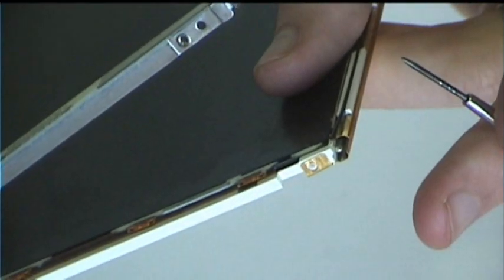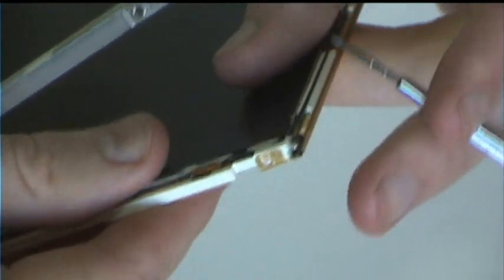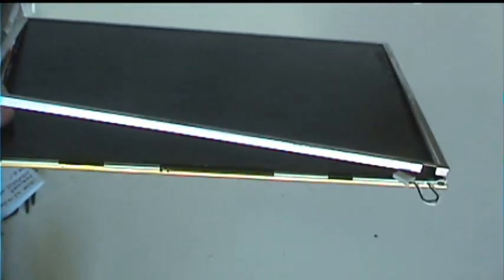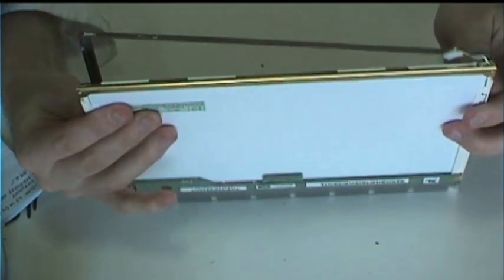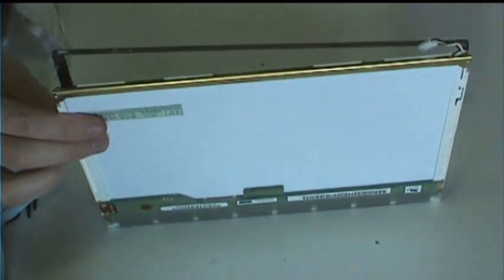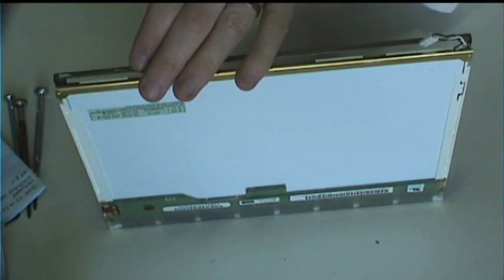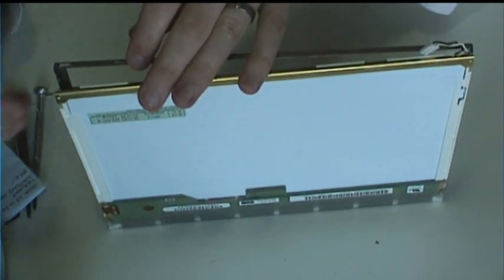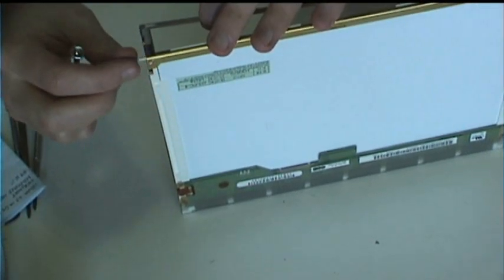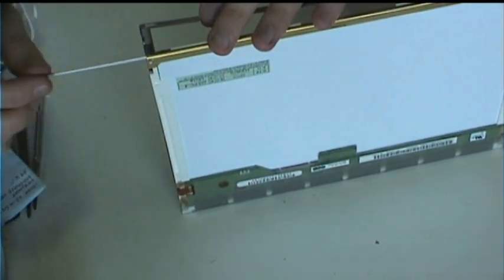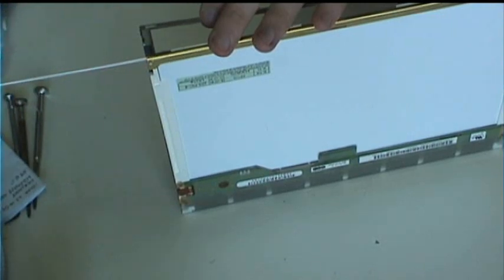Alright, so that's successfully detached. So now basically what we have is the CFL is loose in the brass channel of the display. Now it should be a relatively simple process to just push on the side and slide it right out of there. Look at that. So easy it seems like it takes no skill at all.